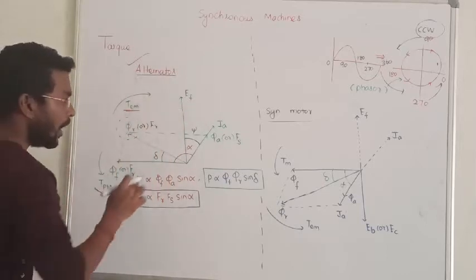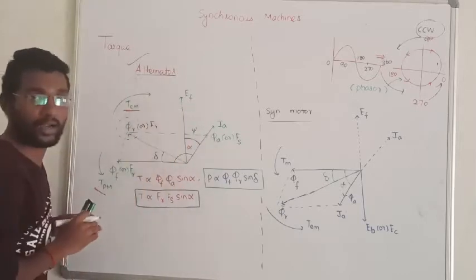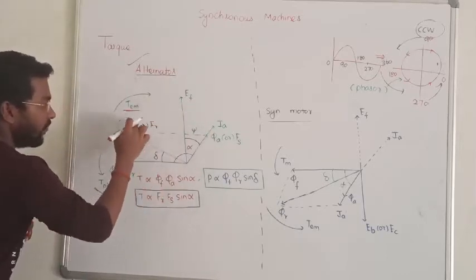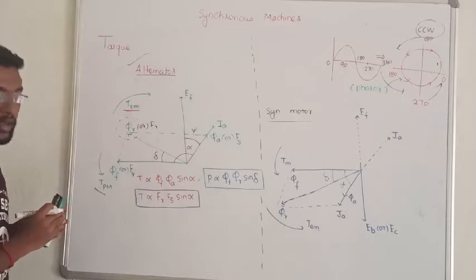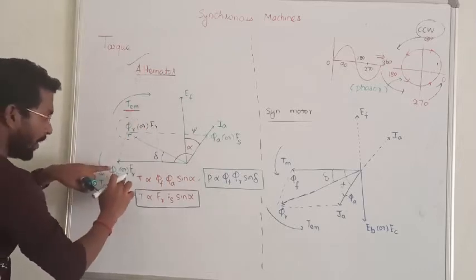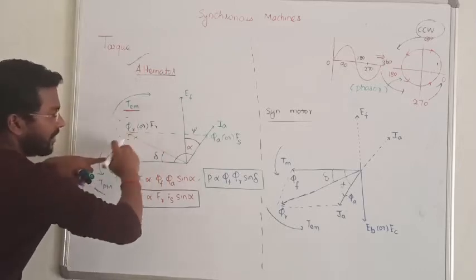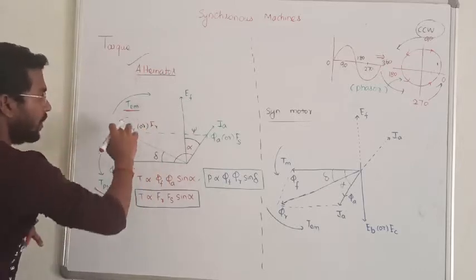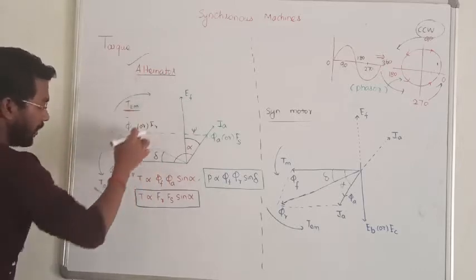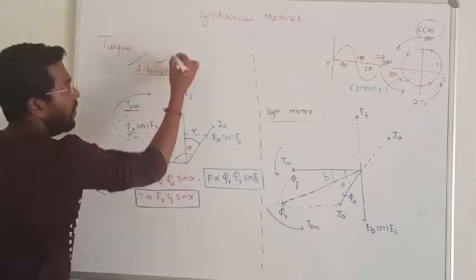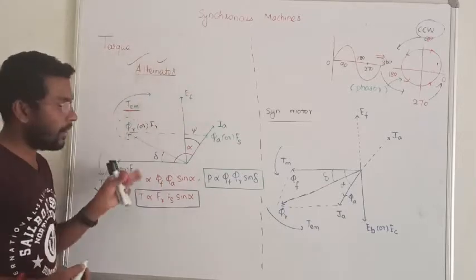The armature flux is here. In that direction, it will try to interact with the armature flux. The electromagnetic torque and the prime mover torque are opposing each other in the case of the alternator.